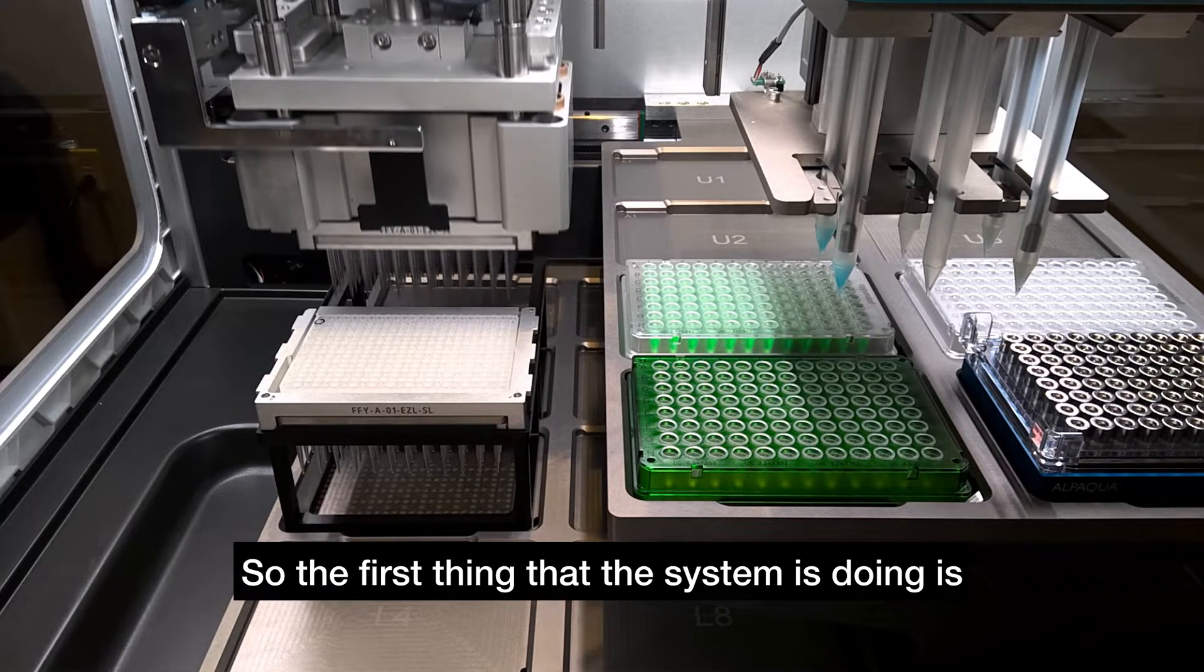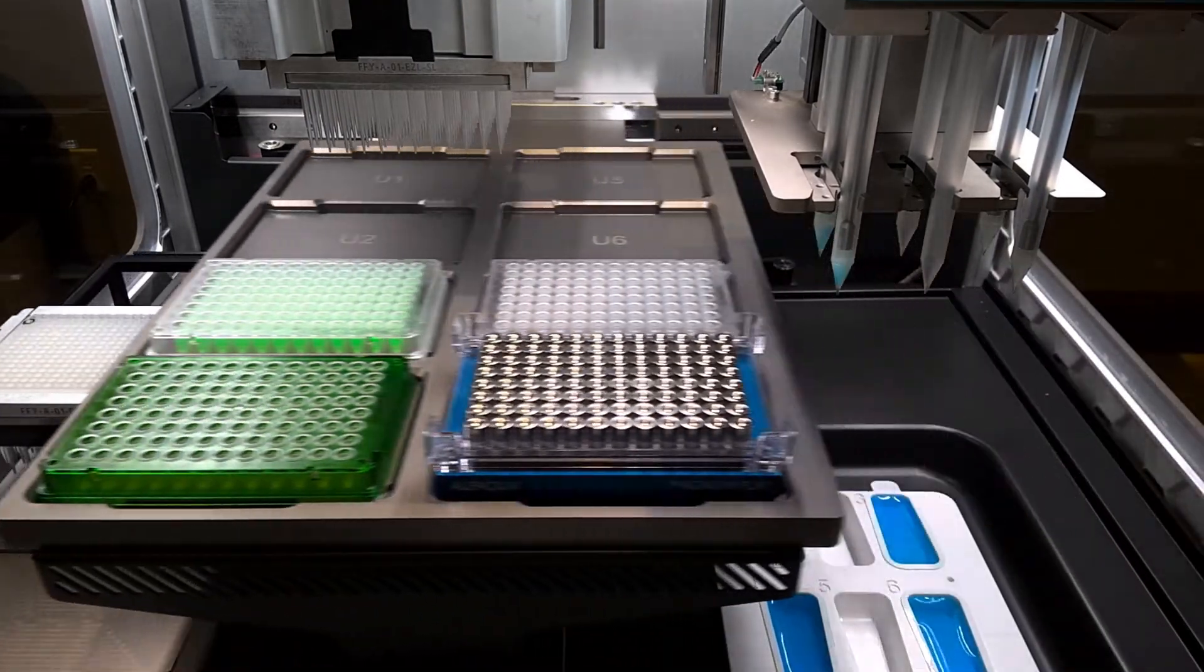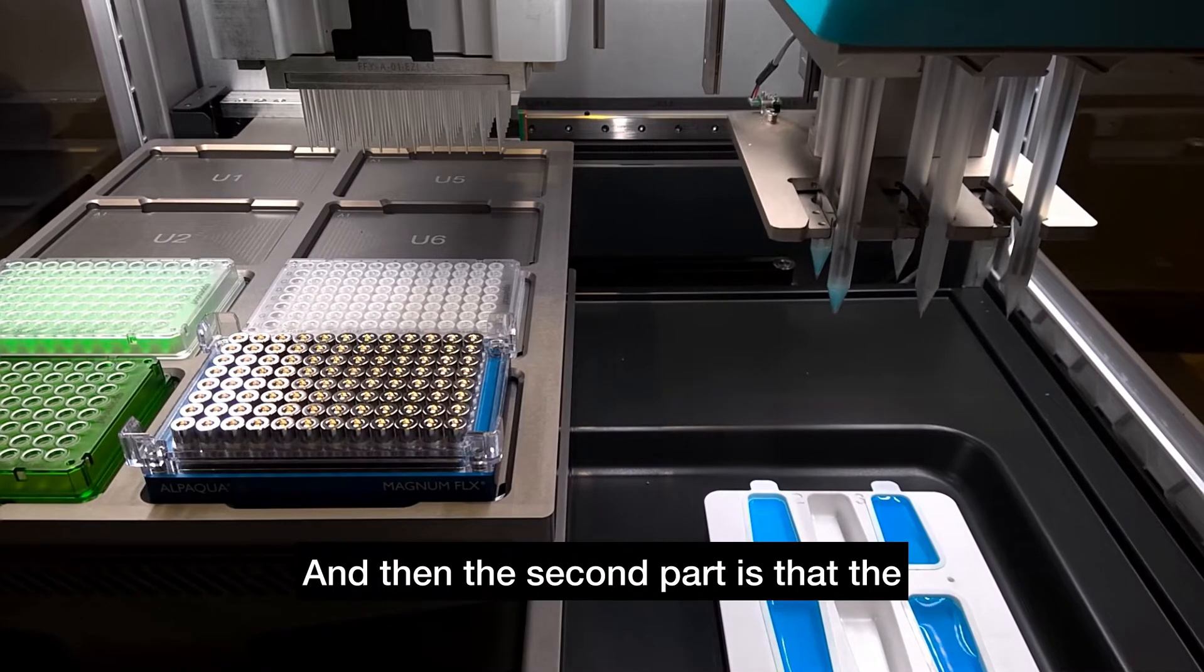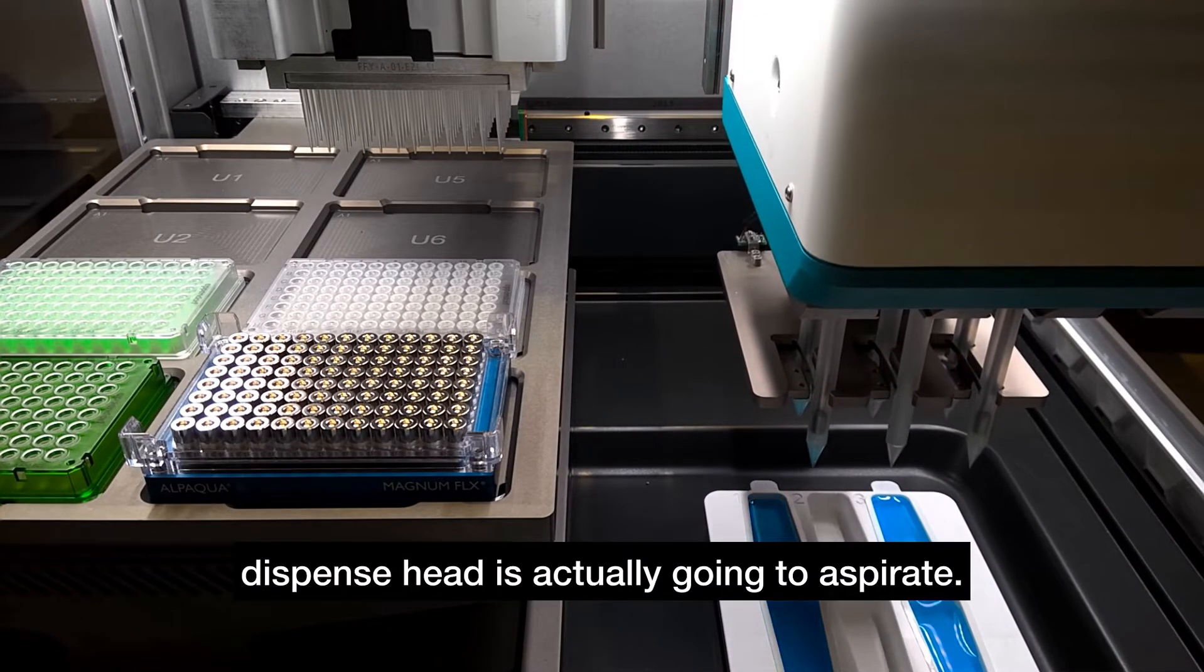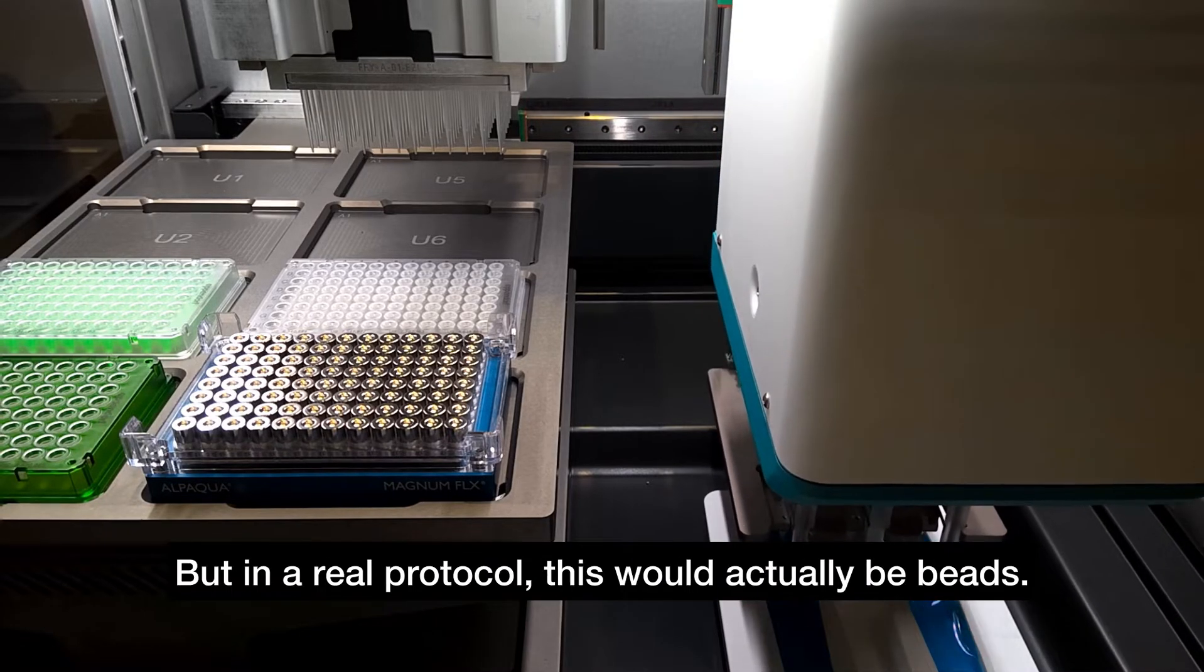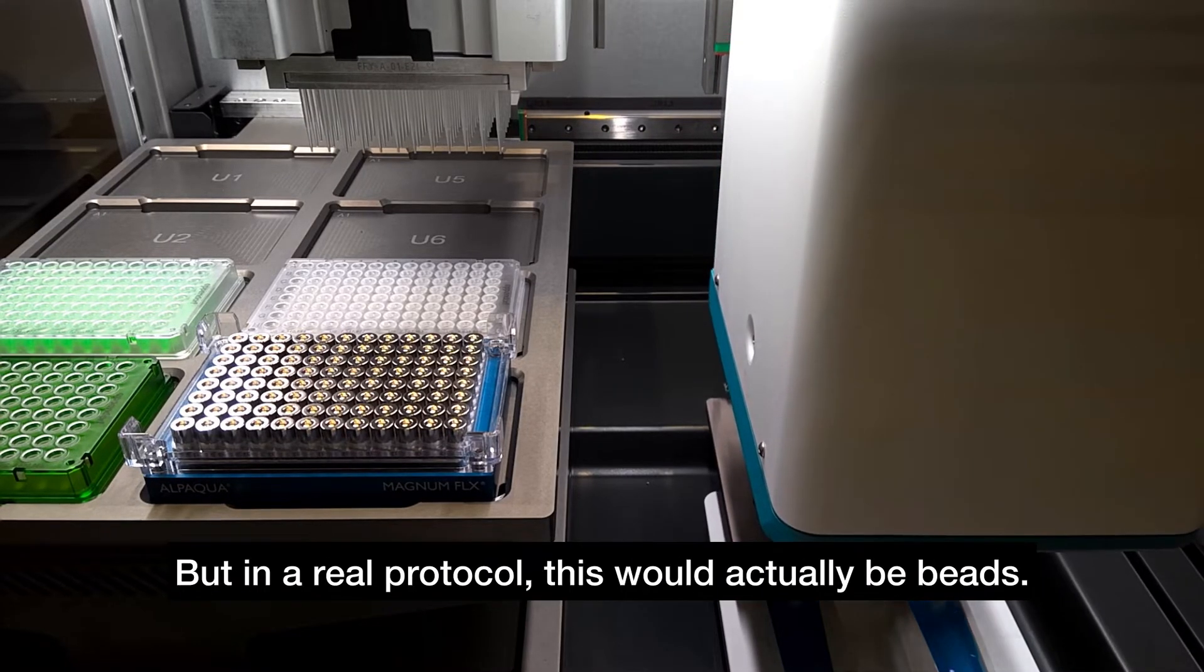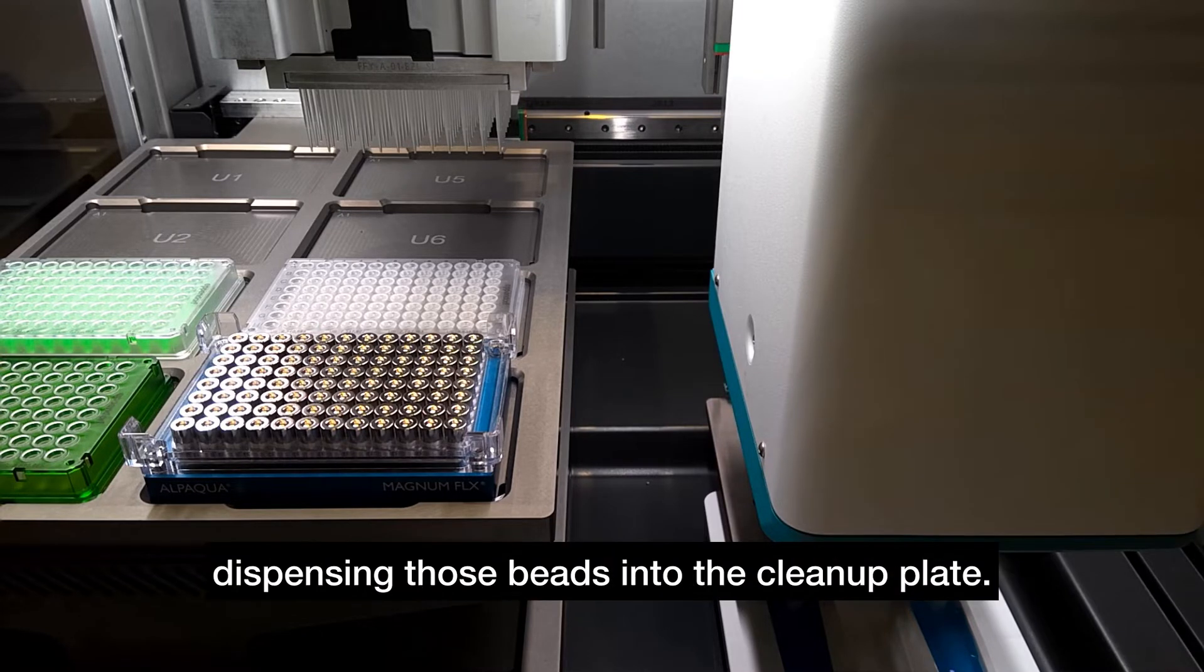So the first thing that the system is doing is picking up a fresh set of 96-well tips. And then the dispense head is actually going to aspirate. In this case, this is just colored blue liquid, but in a real protocol, this would actually be beads. So it's just going to aspirate ready for dispensing those beads into the cleanup plate.